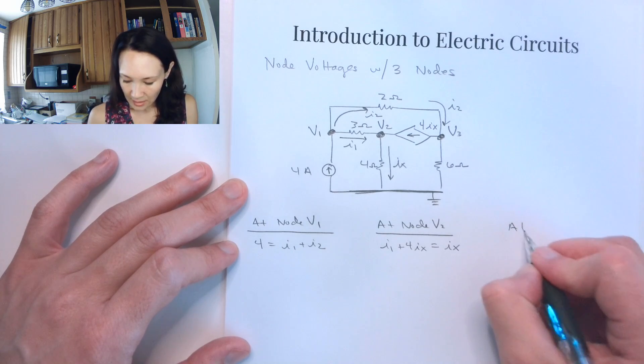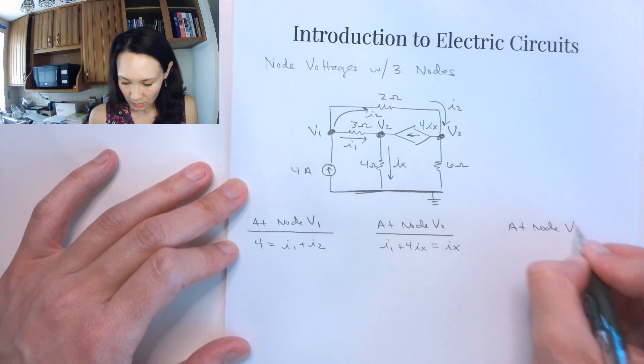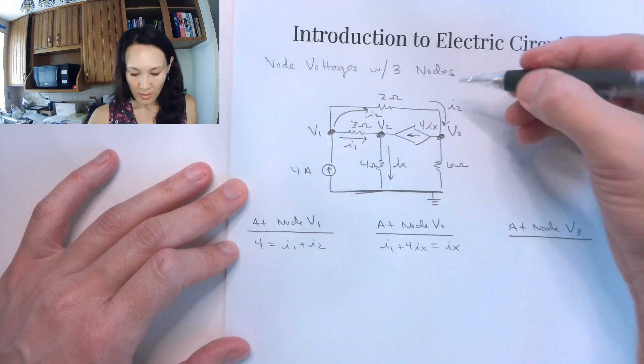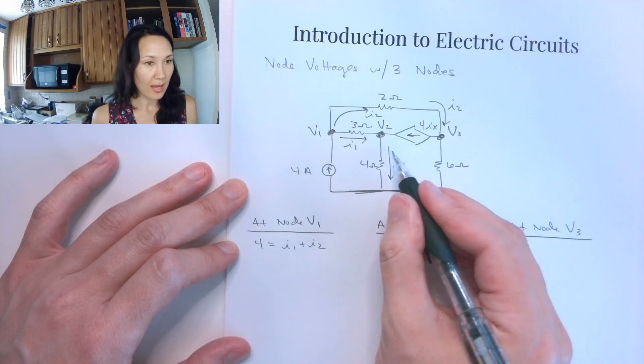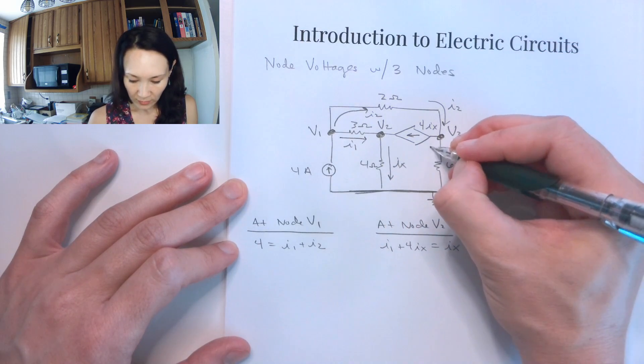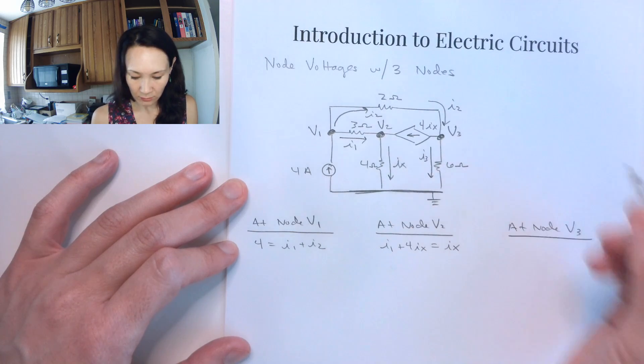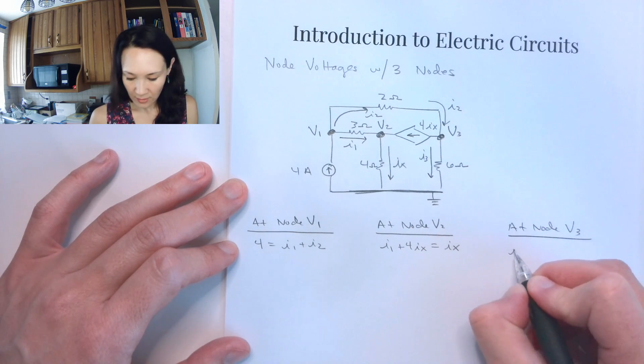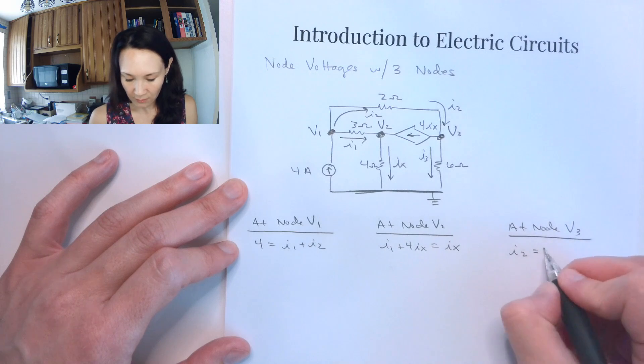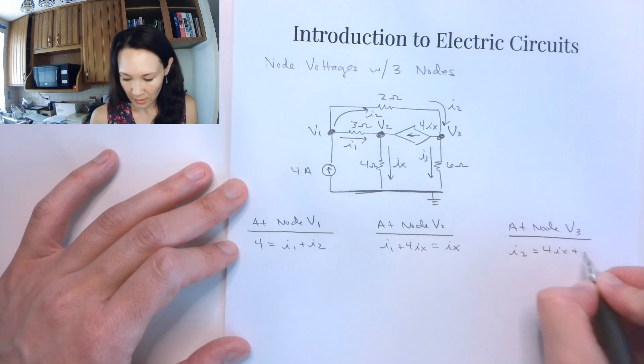Then lastly, at node V3, we have I2 coming in, we have 4 IX coming out, and then we've got the current that's taking the path through the 6 ohm resistor, and I'll label that I3. So going in, I've got I2 coming out, I've got 4 IX plus I3.